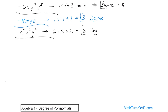So far it's been very simple because they're all just one term and you just add them up. But what if you had a real polynomial like 3x squared minus 7x plus 4? If you want to figure out what the degree is of this polynomial, you see you have now three terms — this is a trinomial.